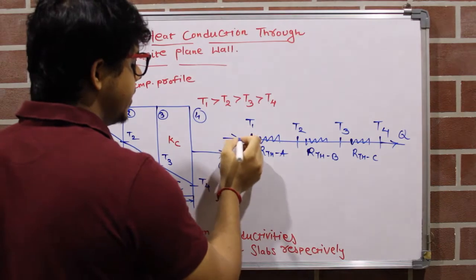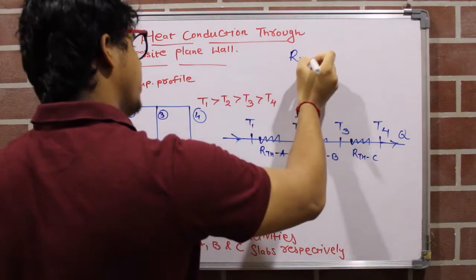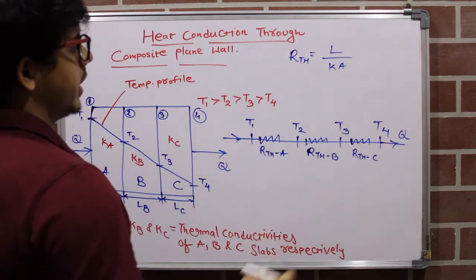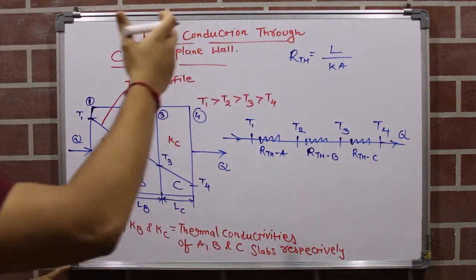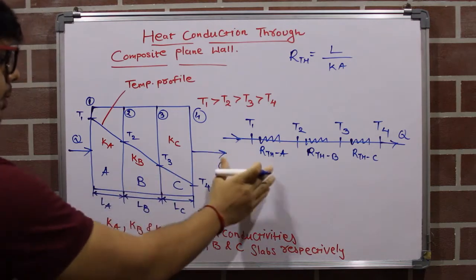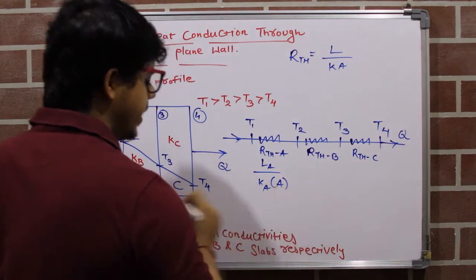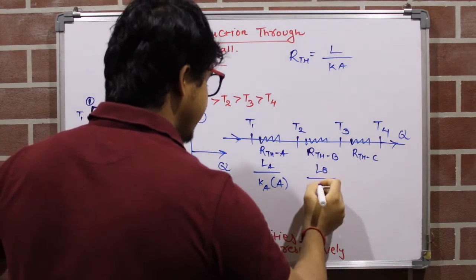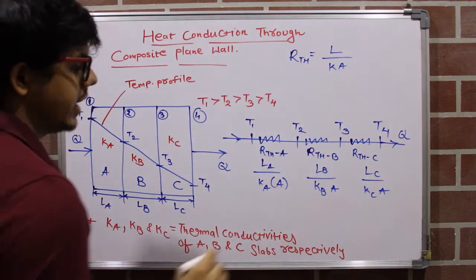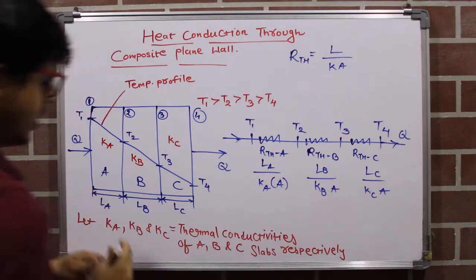In the previous video we derived that Rth for a plane wall equals L divided by K·A, where L is the thickness of the plane wall, K is the thermal conductivity, and A is the area perpendicular to heat flow. Applying this here: Rth_A = La / (Ka·A), Rth_B = Lb / (Kb·A), and Rth_C = Lc / (Kc·A). Notice that the area A is common in all three resistance formulas.